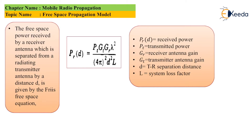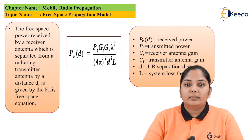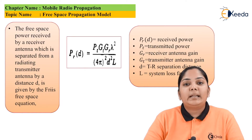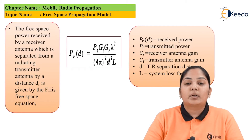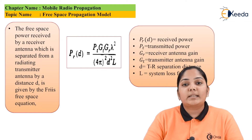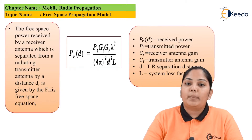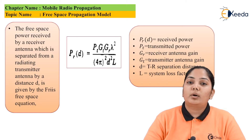The free space power received by the receiving antenna at a distance d between the transmitter and receiver is given by the Friis free space equation: Pr(d) = (Pt × Gt × Gr × λ²) / ((4π)² × d² × L), where Pr(d) is the received power at distance d, Pt is the transmitted power, Gr is the receiver antenna gain, Gt is the transmitter antenna gain, λ is the wavelength, d is the transmitter-receiver distance, and L is the path loss or system loss factor.